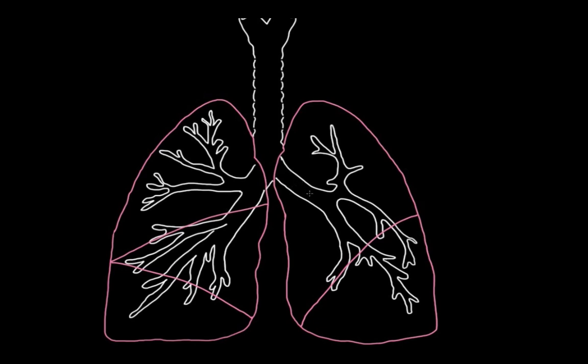Those airways are going to branch off to even smaller airways, and at the end of these we have very tiny sacs which we call alveoli.